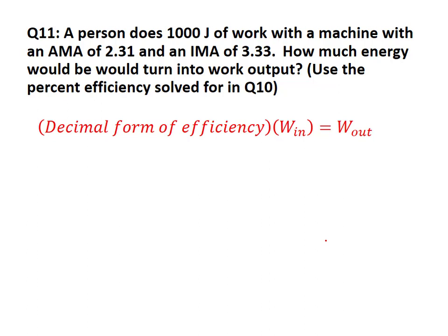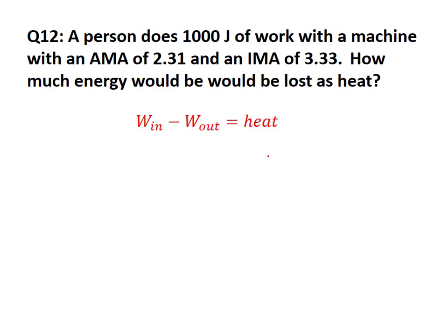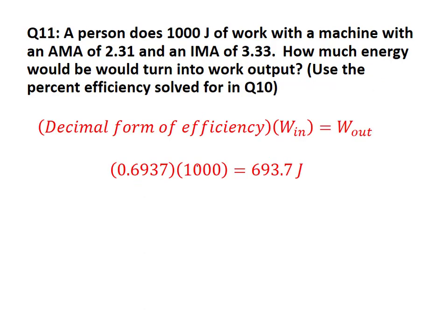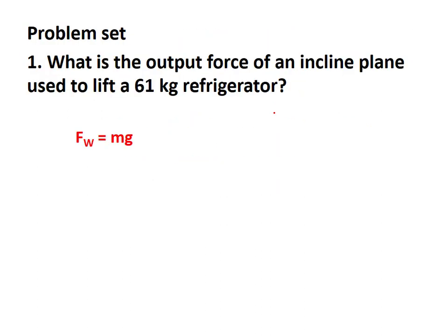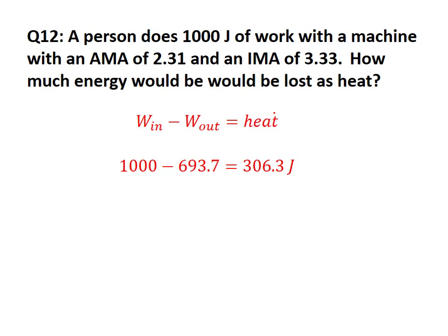If a person does 100 joules of work with a machine that is 69.37% efficient, how much energy turns into work output? Multiply: 69.37% × 100 J = 69.37 joules of work output. How much is lost as heat? Everything missing between input and output: 100 − 69.37 = 30.63 joules lost as heat.